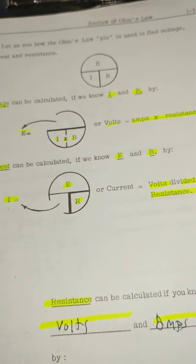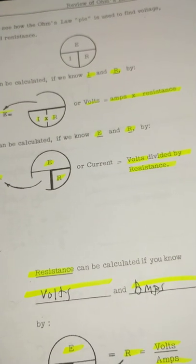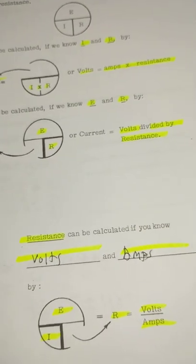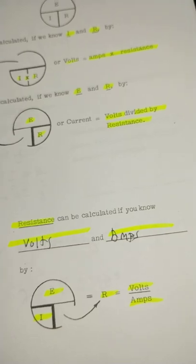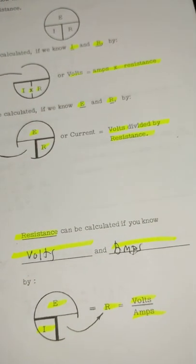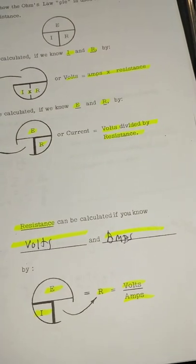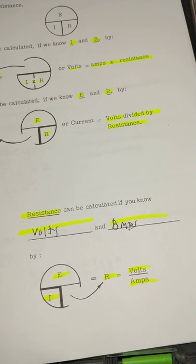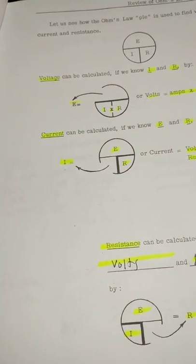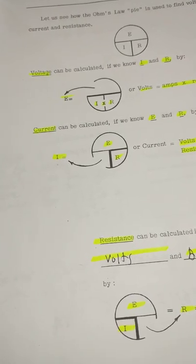Let's see how Ohm's law of the pie is using voltage and currents and resistance. So, the question is, do the resistance count as you know? And the answer is volts and amps, which is correct.